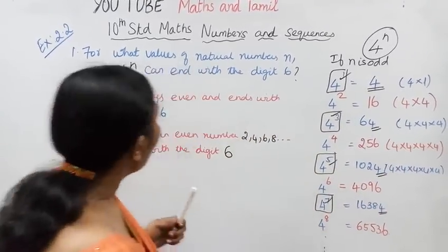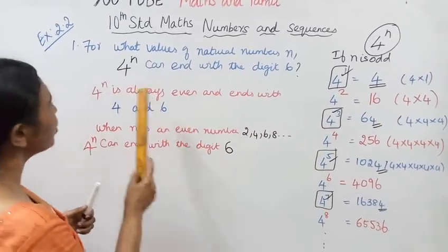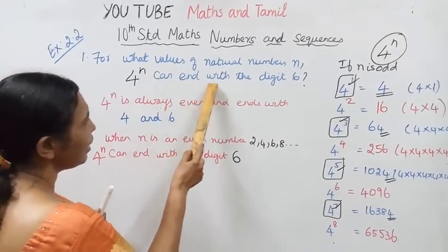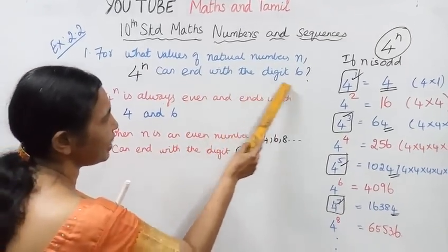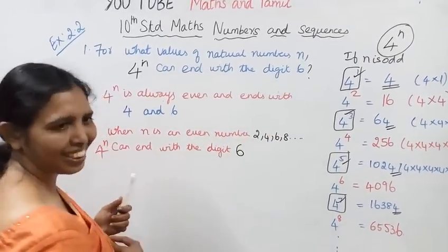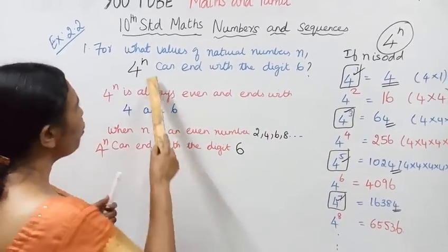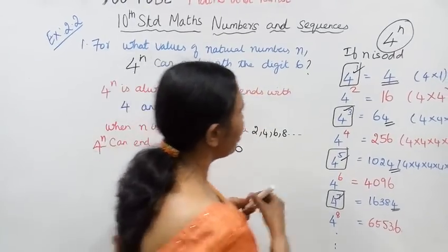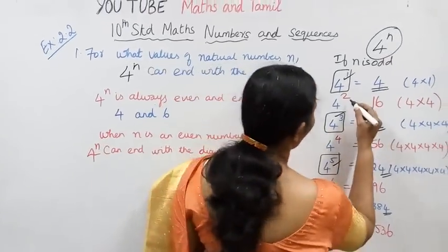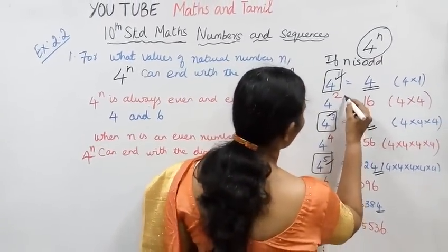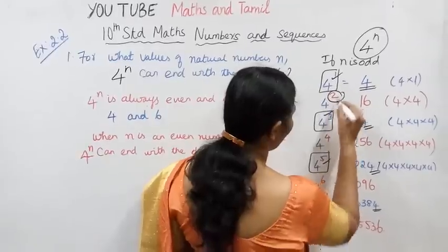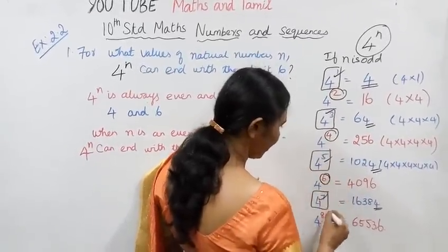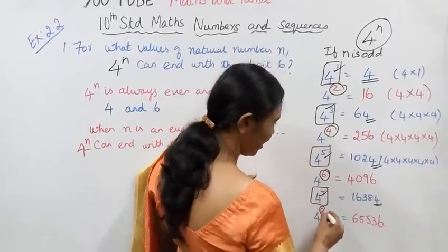That's why 4 power n can end with the digit 6 only for even values of n: 2, 4, 6, 8, and so on.